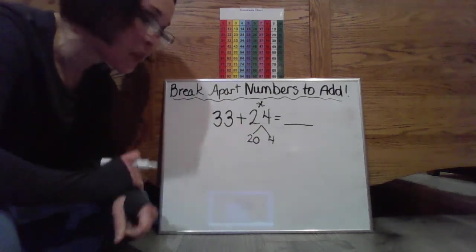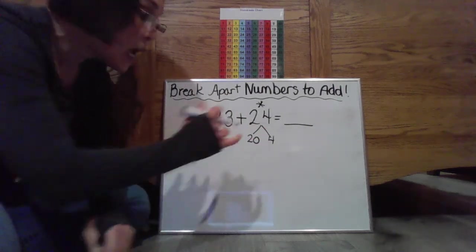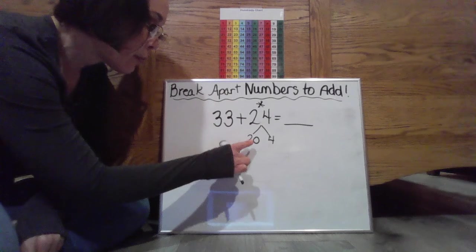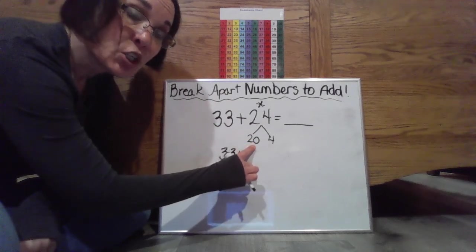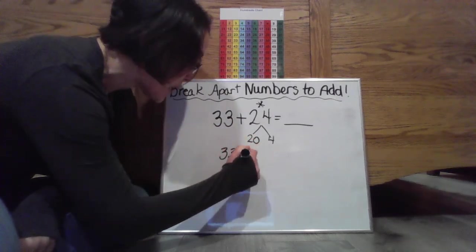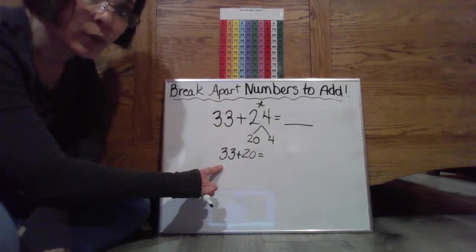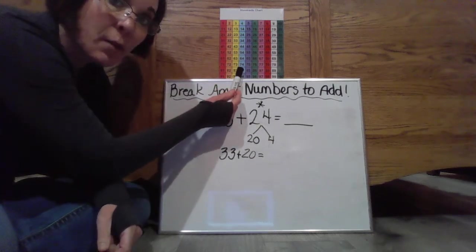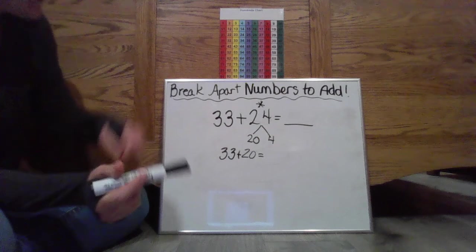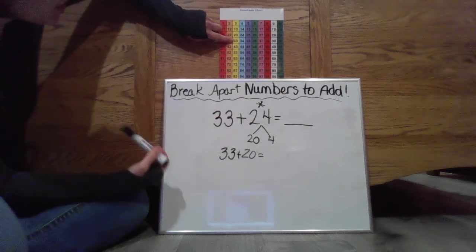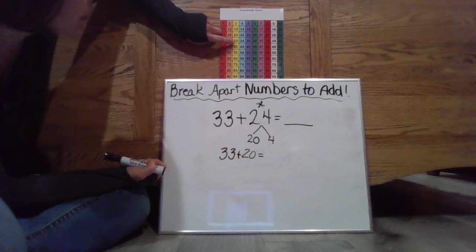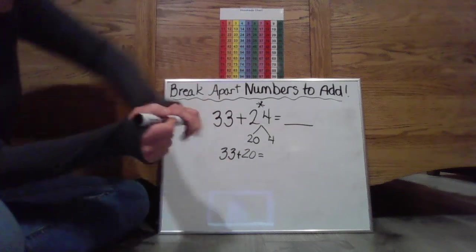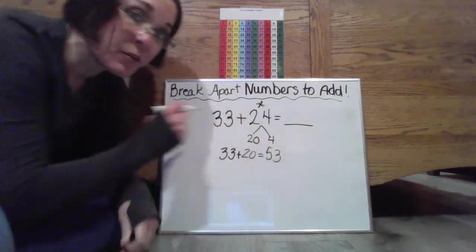So now I'm going to bring my 33 down and I'm going to start adding it to my two tens which is a 20. So 33 plus 20. I could use my hundreds chart as a tool. Starting on my 33, two tens which is your 20, one, two, that's two hops, or 10, 20, then it's going to bring me to a 53.